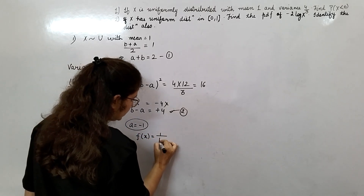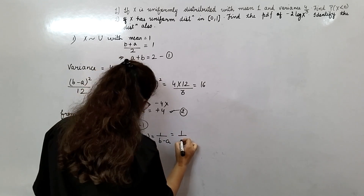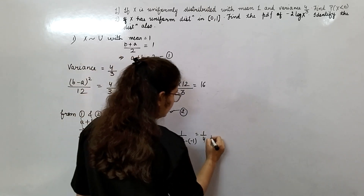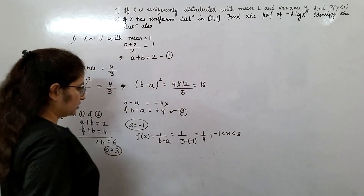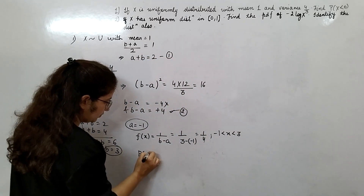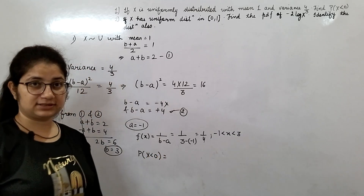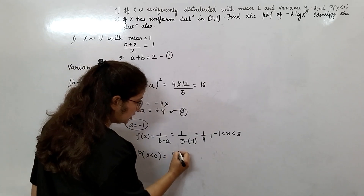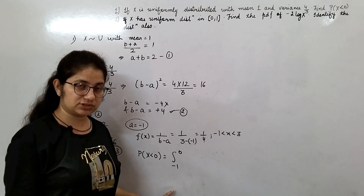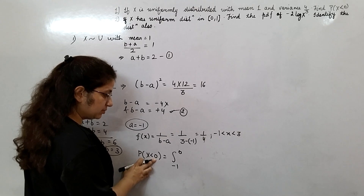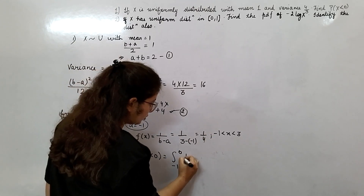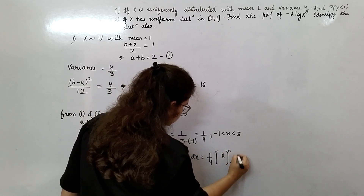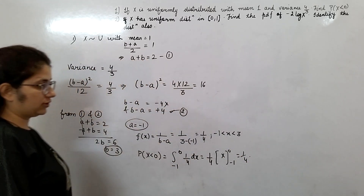So your function f(x) = 1/(b - a) = 1/(3 - (-1)) = 1/4, where x lies between -1 and 3. Now to find P(X < 0): X must be less than 0, so the limits are from -1 to 0. Since this is a continuous distribution, we integrate: ∫ from -1 to 0 of (1/4) dx = (1/4) × [x] from -1 to 0 = 1/4. The probability of X less than 0 is 1/4.